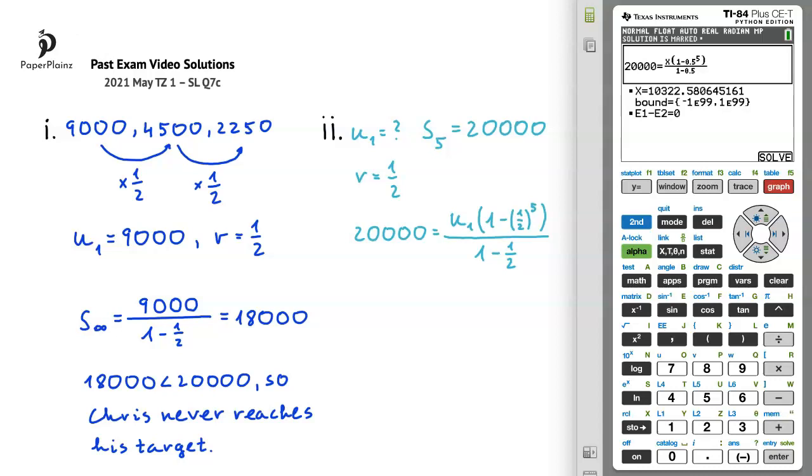So x, or u1, is 10,322.5806, and since we are asked to give our answer to the nearest dollar, we'll write that u1 is 10,323 dollars.